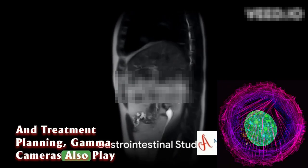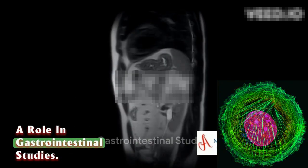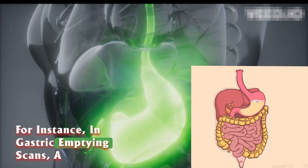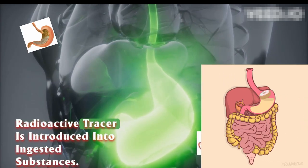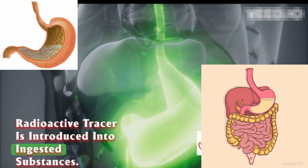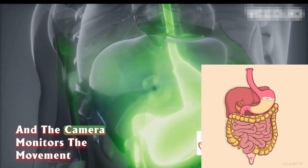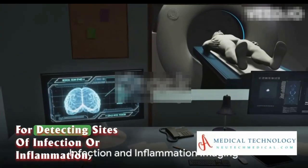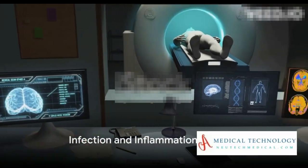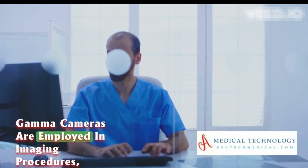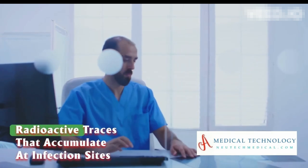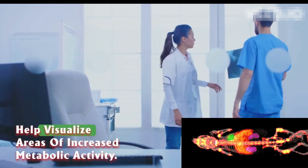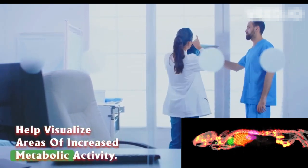Gamma cameras also play a role in gastrointestinal studies. For instance, in gastric emptying scans, a radioactive tracer is introduced into ingested substances and the camera monitors the movement and function of the digestive system. For detecting sites of infection or inflammation, radioactive tracers that accumulate at infection sites help visualize areas of increased metabolic activity.